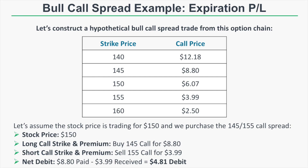Now let's look at a hypothetical example and drill down on each of those characteristics. Here we have a hypothetical option chain, and we're going to construct a bull call spread. With the stock price trading at $150, we purchase the 145/155 call spread. We buy the 145 call for $8.80 and sell the 155 call for $3.99. Since we paid $8.80 and collected $3.99, this 145/155 call spread comes out to a net debit of $4.81.